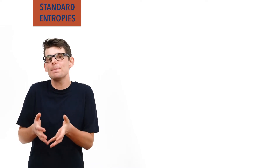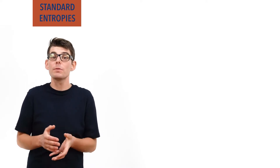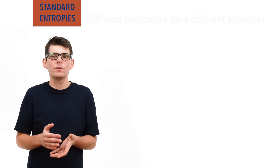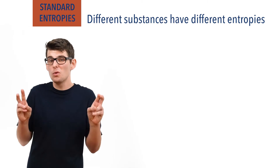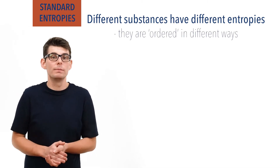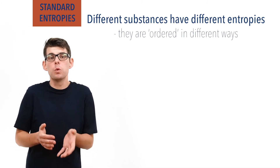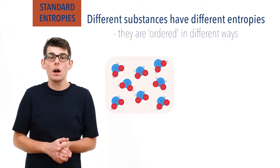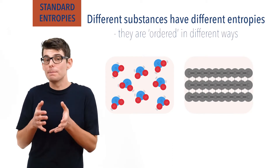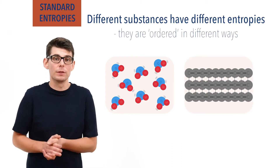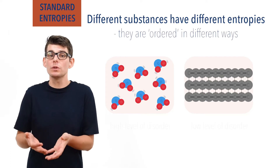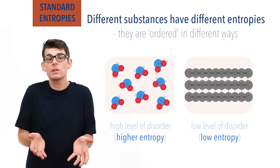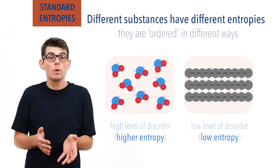If we take the simple definition and treat entropy as a way of measuring disorder, this means every substance must have its own value of entropy, as every substance is ordered in a slightly different way. For example, if you took one mole's worth of water molecules at room temperature and one mole's worth of solid carbon at room temperature, the arrangement of particles in both systems is very different, meaning their level of disorder is also different, giving them different entropies. Even substances that are in the same state will have different entropies.